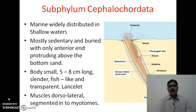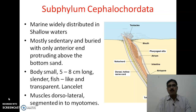Beginning with the habit and habitat of the cephalochodates: they are marine, meaning they are present only in seawater, and are especially widely distributed in shallow waters. They are mostly sedentary and found buried with only their anterior end protruding above the bottom sand, as visible in the diagram on the slide where only the anterior region with tentacles protrudes out of the sea bottom.